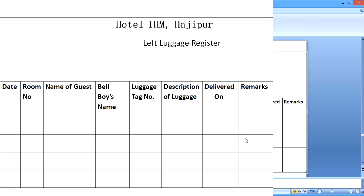We can add further columns into this in an actual register. We may also have a column for guest signature and a column for bellboy signature, so that they are responsible for their actions.